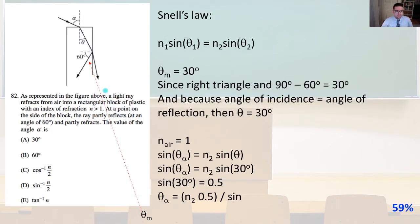As represented in the figure above, a light ray refracts from air into a rectangular block of plastic with an index of refraction N greater than 1. At a point on the side of the block, the ray partly reflects at an angle of 60 degrees and partly refracts. The value of the angle alpha is...